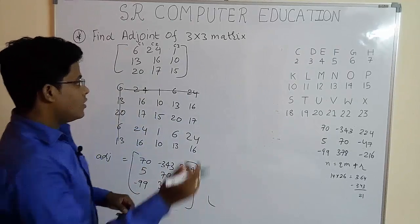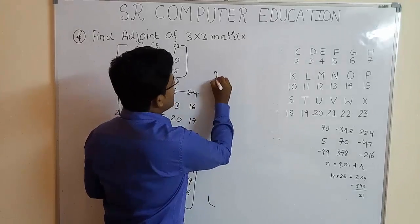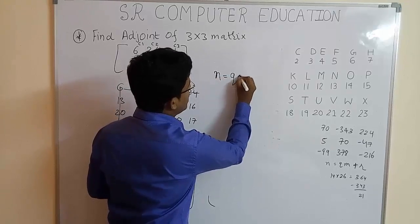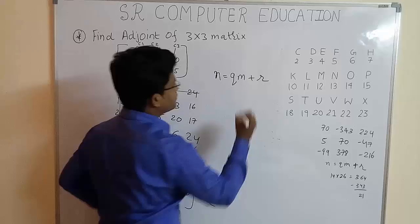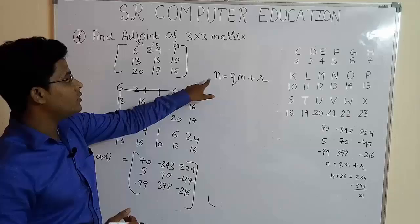For that, you have to follow this method. Remember this formula: N equal to Q into M plus R. N is the number for which you want to find a positive value. So, here the number is minus 343.